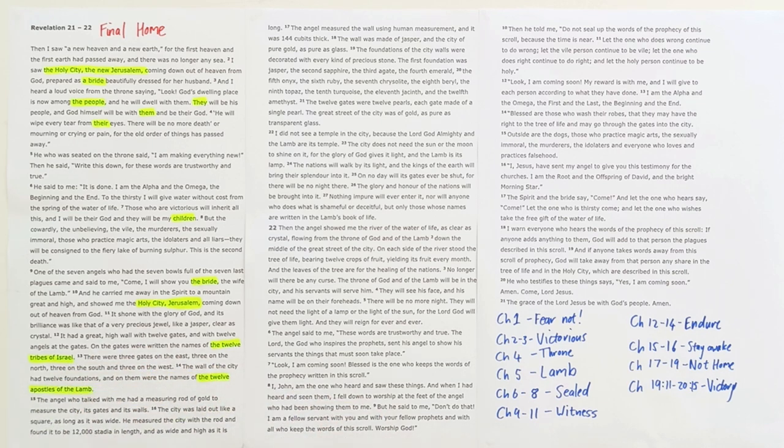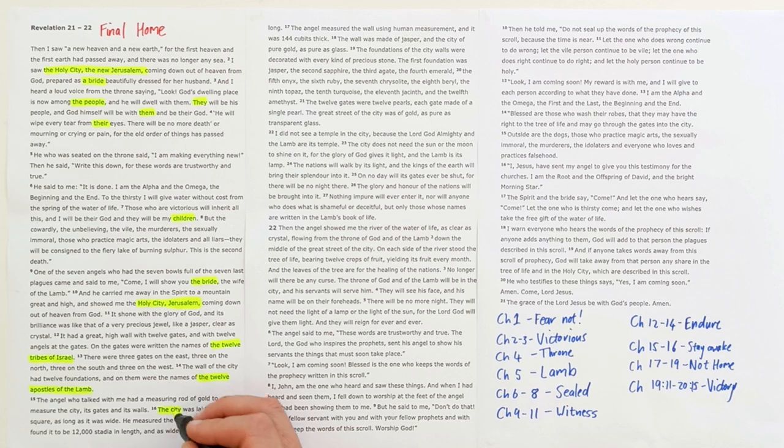This description of God's people goes back to chapter 4 where we saw the 24 elders who represented God's old testament people and God's new testament people. Here on the gates of the city are the names of the 12 tribes, and the foundations of the city are the names of the 12 apostles of the Lamb. So this city is a picture for us of all of God's redeemed people from the old and new testament, and we'll see that the city is in focus through a lot of this section.